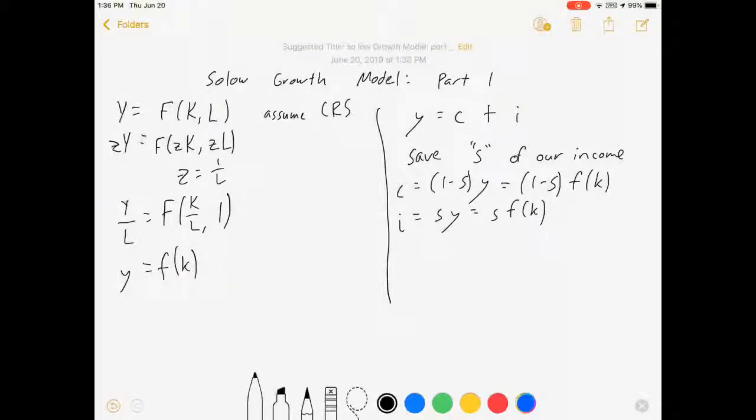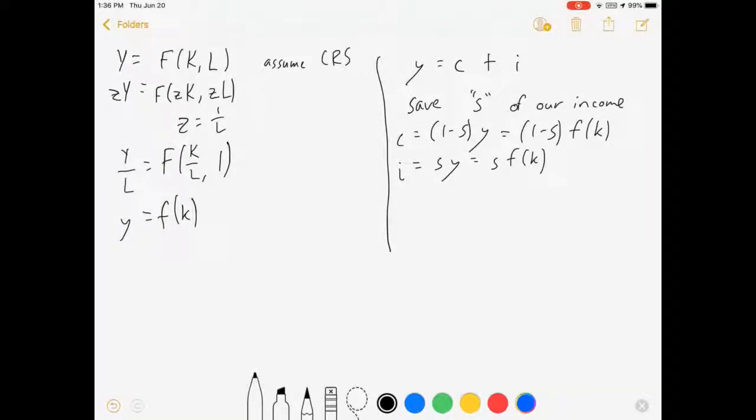So, if I were to graph this, this is a graph you'll probably see in your textbook. It's got capital on this axis and we've got output per worker on this axis. Our production function, if it looks like this, our investment function is a scaled version of this.